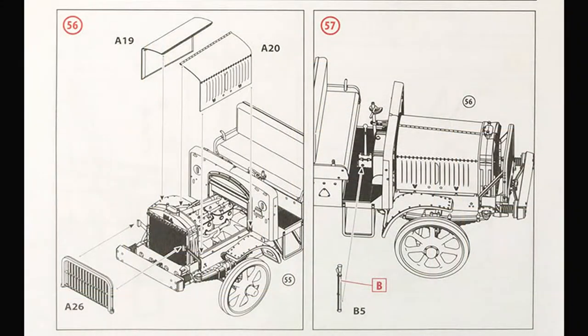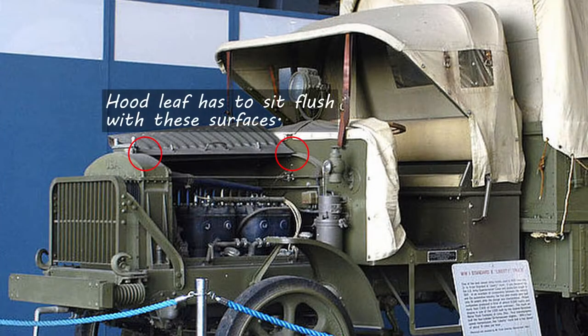We can sand the edge gently to clean up the cut. The hood leaves butt up against the firewall and radiator and to ensure a tight fit we'll paint our leaves first and we'll stall them later once our cabin radiator are attached to the frame.